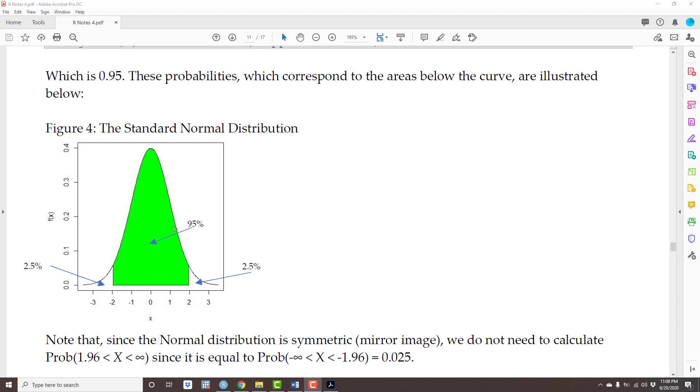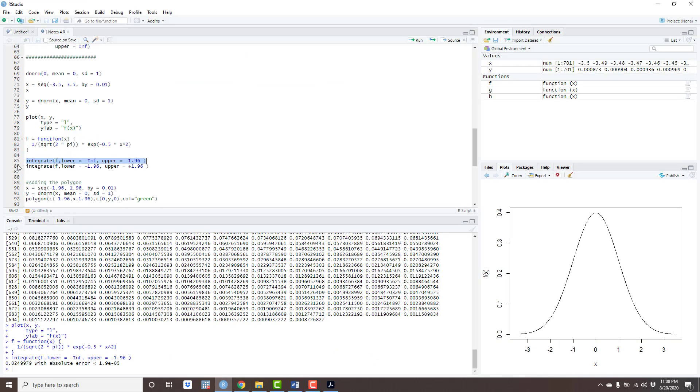And I already know that it has to be 95 percent because if this is 2.5 percent and this is 2.5 percent, this has to be 95 percent. But let's do it anyway. integrate(f, -1.96, +1.96). That is 95 percent or 0.95.